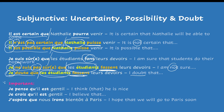Here is a very important point. You have three verbs to remember: je pense qu'il est gentil, je crois qu'il est gentil, j'espère que nous irons bientôt à Paris — I think that, I believe that, I hope that. With those three expressions, you will not use the subjunctive. You will use the indicative. You see here we have a regular present tense and here we have a future.